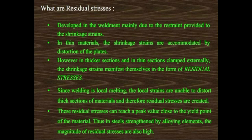In thin material, the shrinkage strains are accommodated by distortion of the plate. However, in thicker sections or when thin sections are clamped externally, the shrinkage strains manifest themselves in the form of residual stress. Since welding is a local melting process, the local strains are unable to distort the thick section of material, and therefore residual stresses are created.